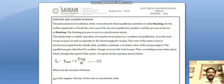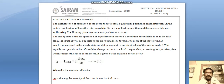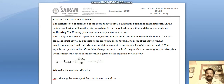In this video we are going to see about hunting and damper winding. What is hunting? When the equilibrium position changes — when we increase or decrease the load from the synchronous machine — the equilibrium position changes. This phenomenon of oscillation of the rotor about its final equilibrium position is called hunting.